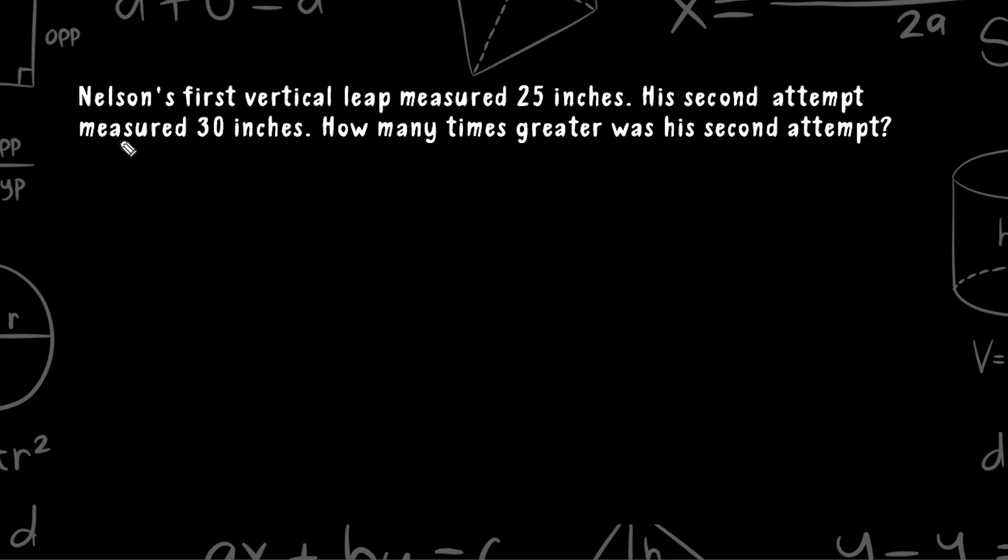This problem reads that Nelson's first vertical leap measured 25 inches. His second attempt measured 30 inches. How many times greater was his second attempt?